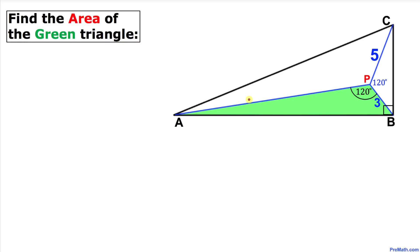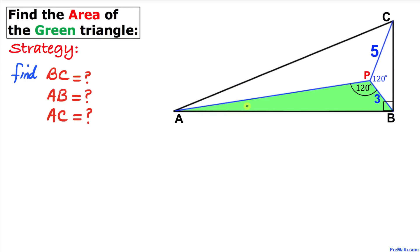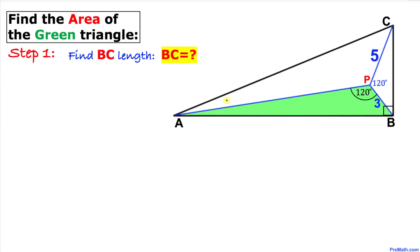Welcome to PreMath. In this video tutorial we are going to calculate the area of this green shaded triangle ABP, such that the length of line segment CP is 5, line segment BP is 3, and the angle between them is 120 degrees each. Let's get started with the solution. Here's our action plan: before we calculate the area of this green triangle, we must calculate BC, AB, and AC.